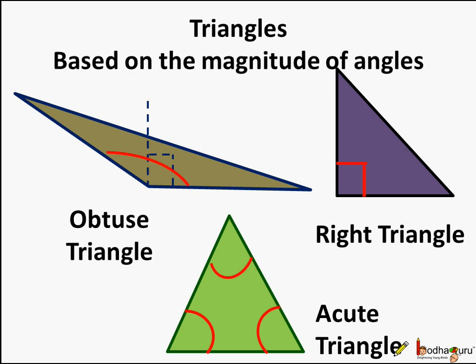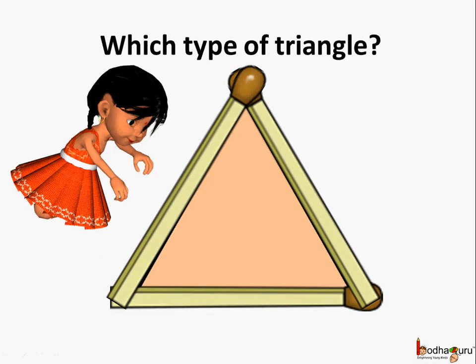Let us see the other types of triangles. This is another type of triangle which Khushi made. What is the difference? Here all the three angles are equal.